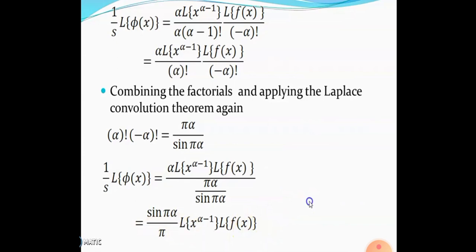Multiplying through by alpha: one over s times Laplace of phi(x) equals alpha into Laplace of (x raised to alpha minus 1) into Laplace of f(x) divided by alpha into (alpha minus 1) factorial into (minus alpha) factorial. Since alpha times (alpha minus 1) factorial equals alpha factorial, we get: one over s times Laplace of phi(x) equals alpha into Laplace of (x raised to alpha minus 1) into Laplace of f(x) divided by alpha factorial into (minus alpha) factorial. Using the gamma function identity: gamma(alpha) times gamma(minus alpha) equals pi divided by sin(pi alpha).